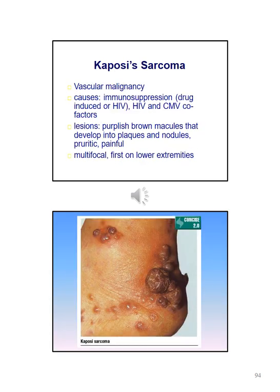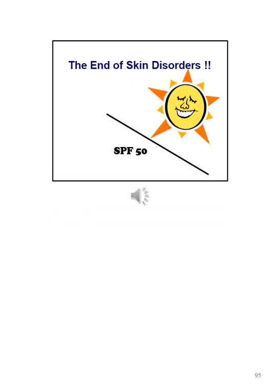Kaposi's sarcoma is a vascular malignancy. Causes can include immunosuppression, HIV, and CMV cofactors. The lesions can be described as purplish-brown macules that develop into plaques and nodules; it can be pruritic and painful. It is multifocal and usually first appears on the lower extremities. This completes the lecture on skin disorders.